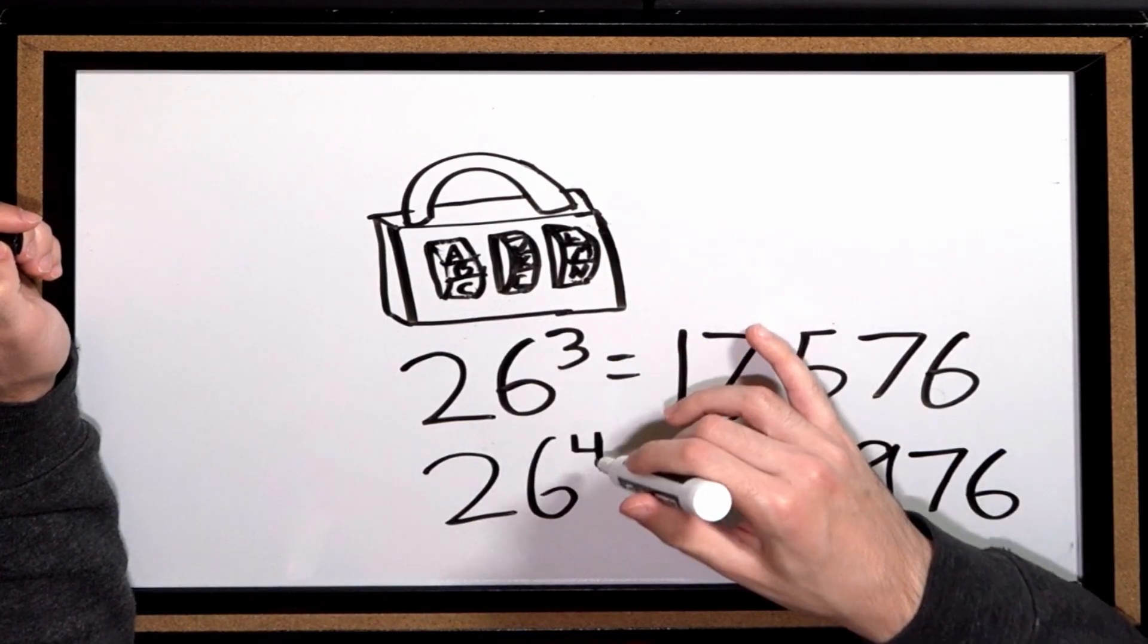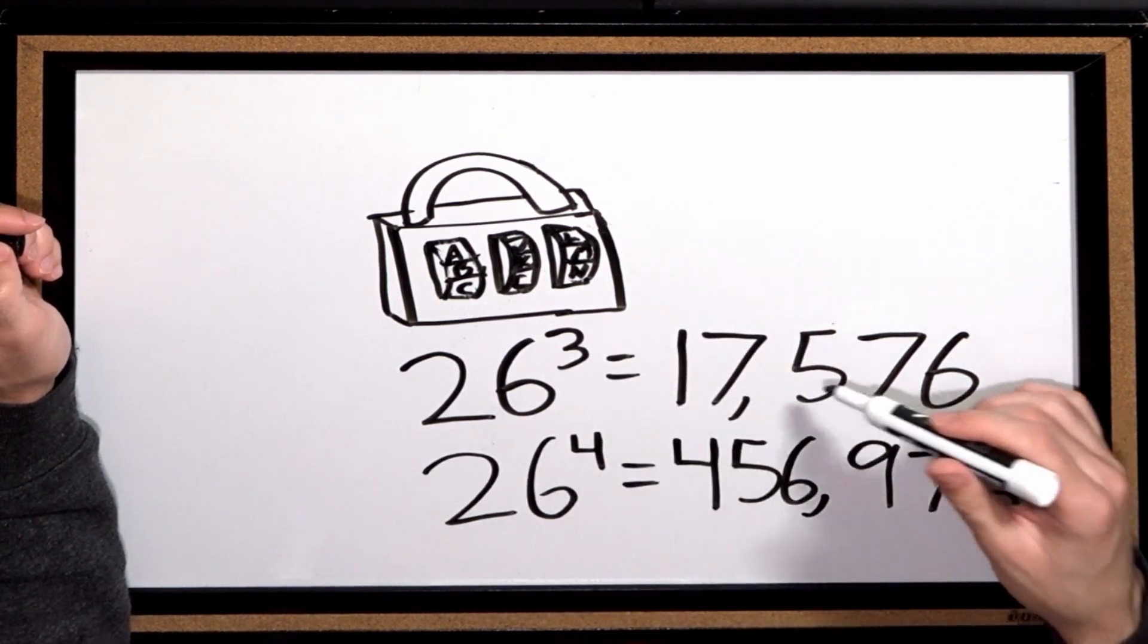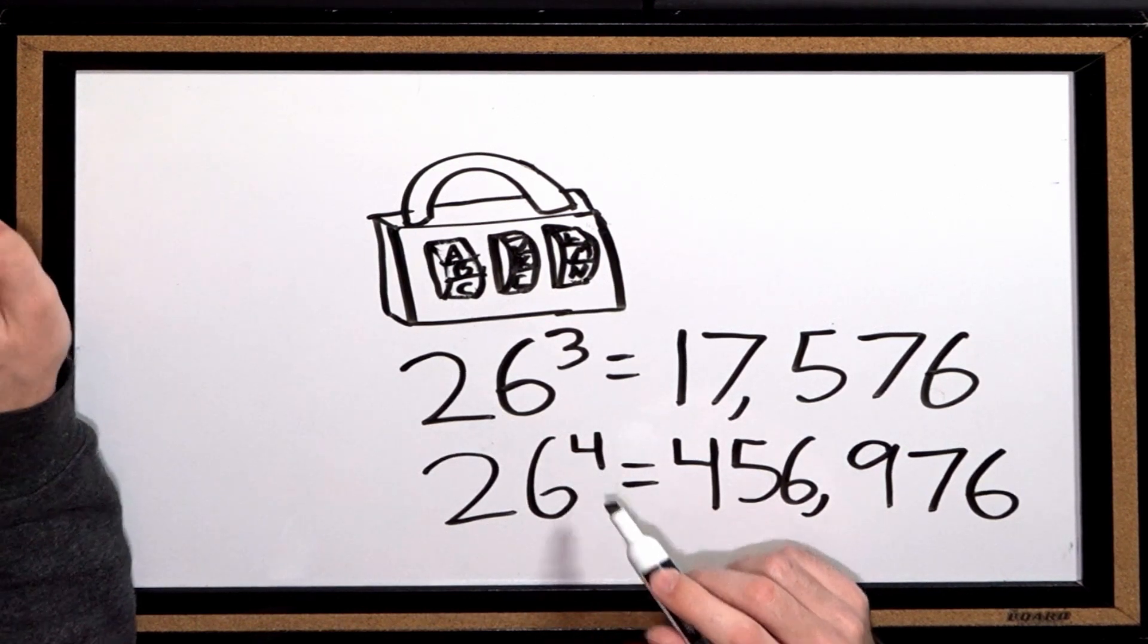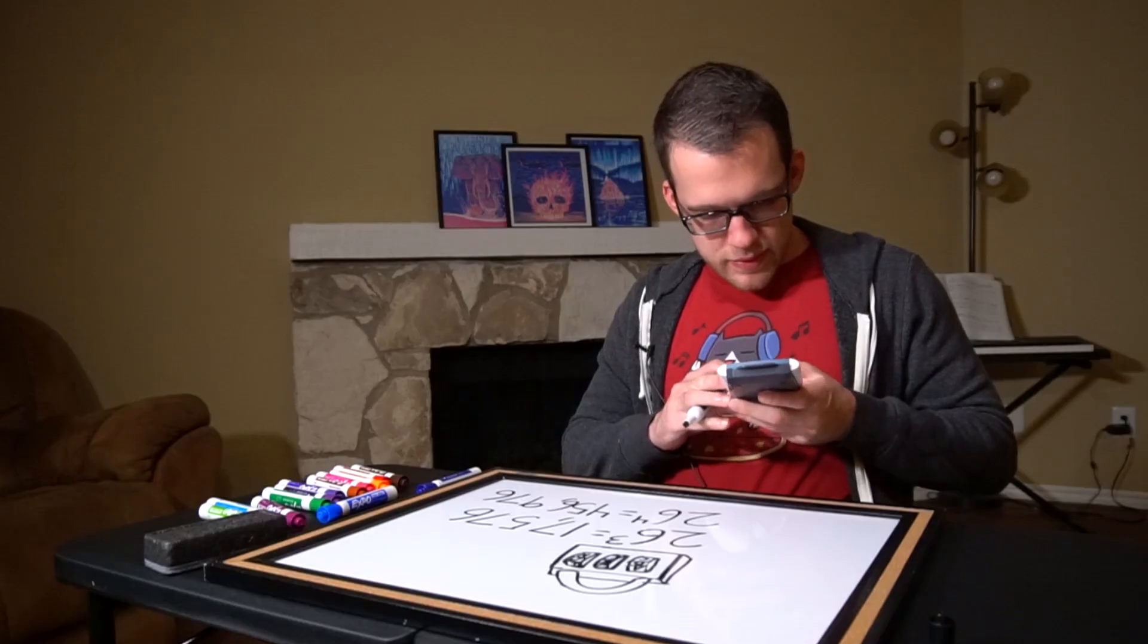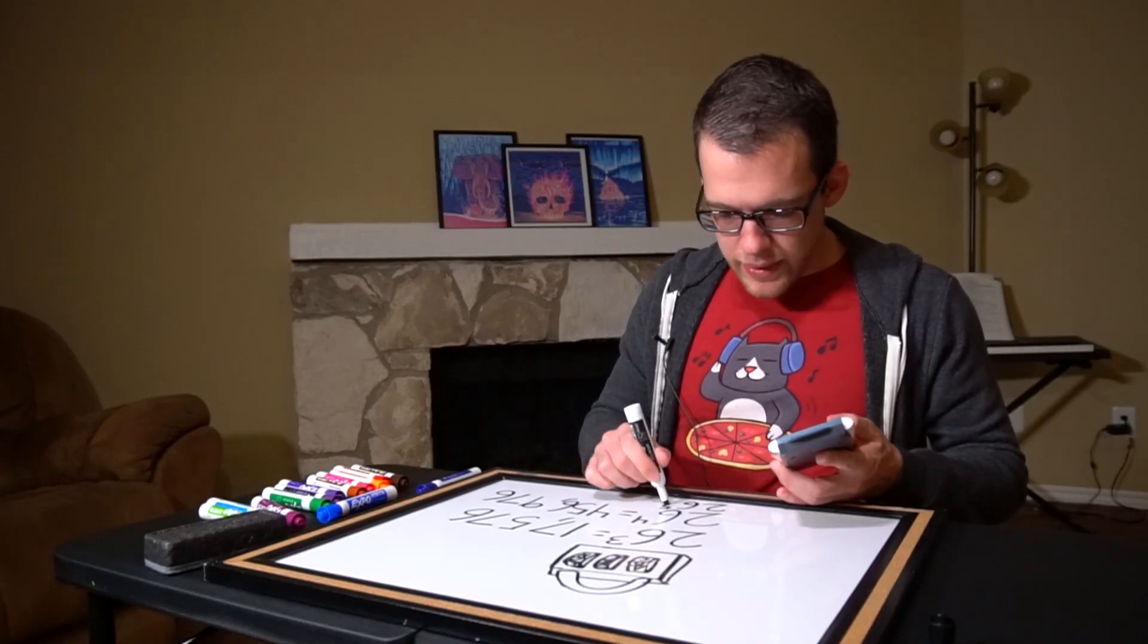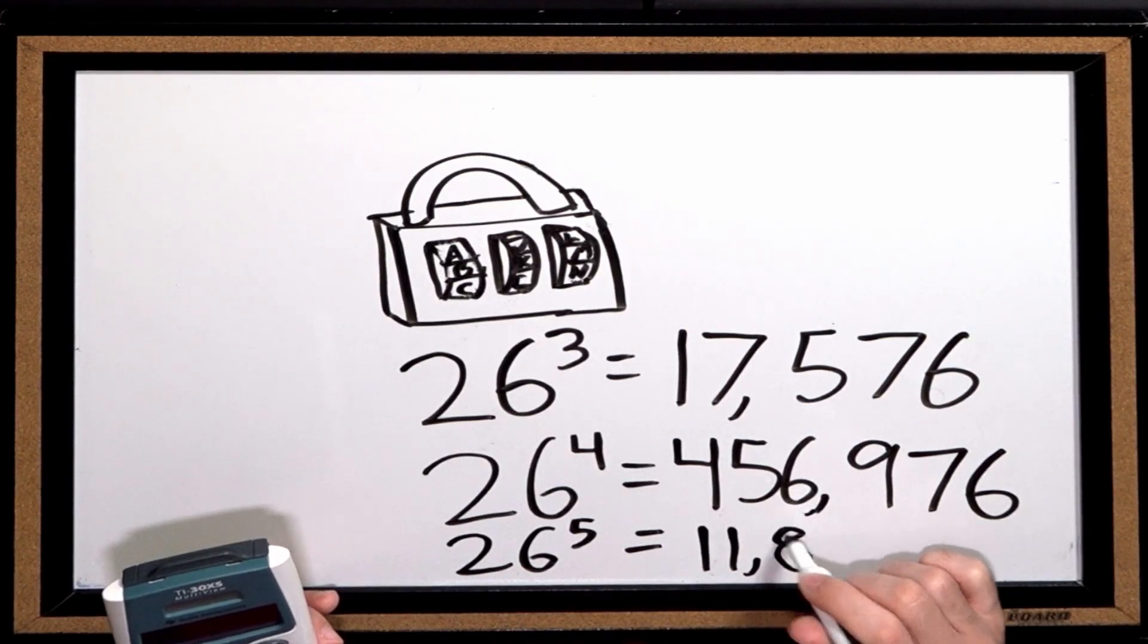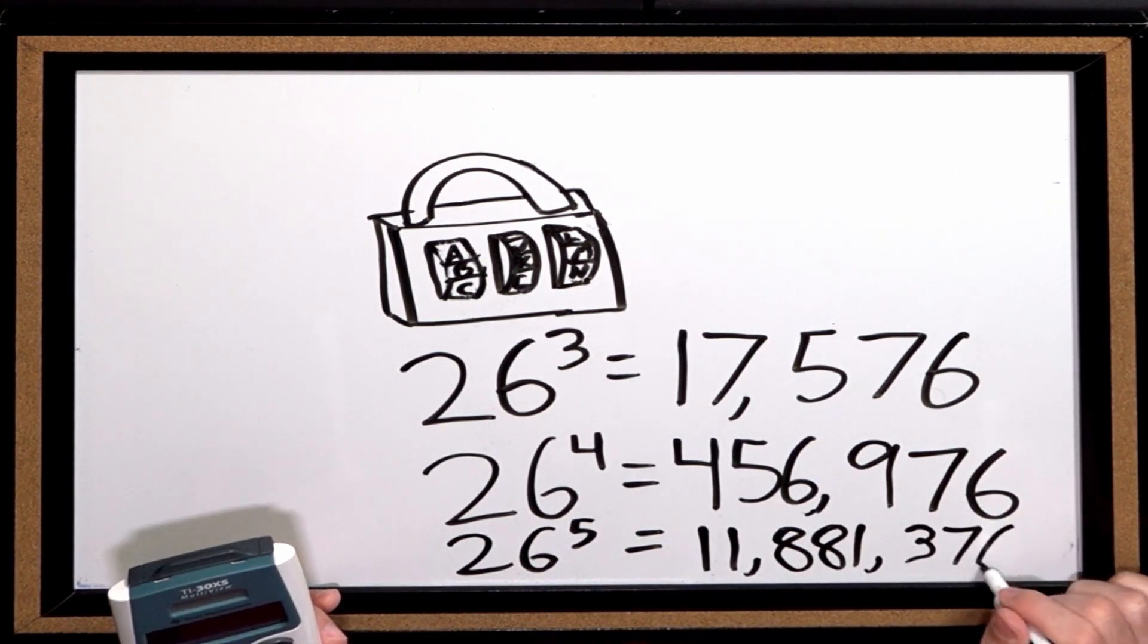Because whenever an exponent—in this example you see it jumped from three to four and it went way up. If this went to 26 to the power of five, this number would go up to... so now we have 11,881,376.